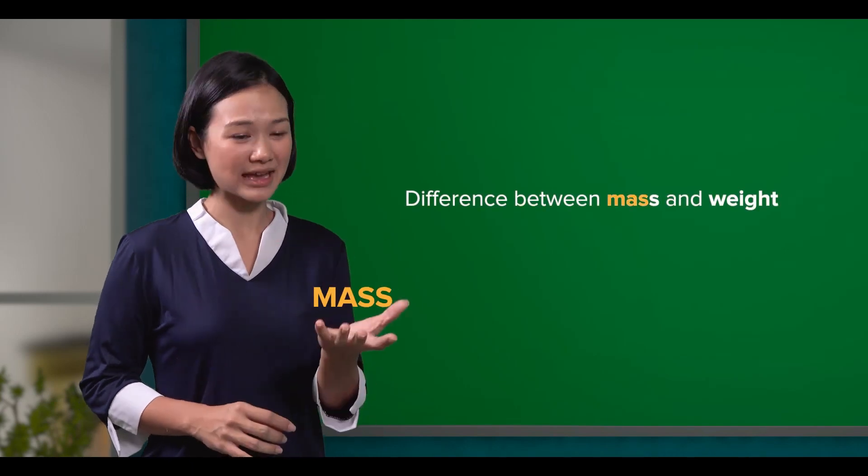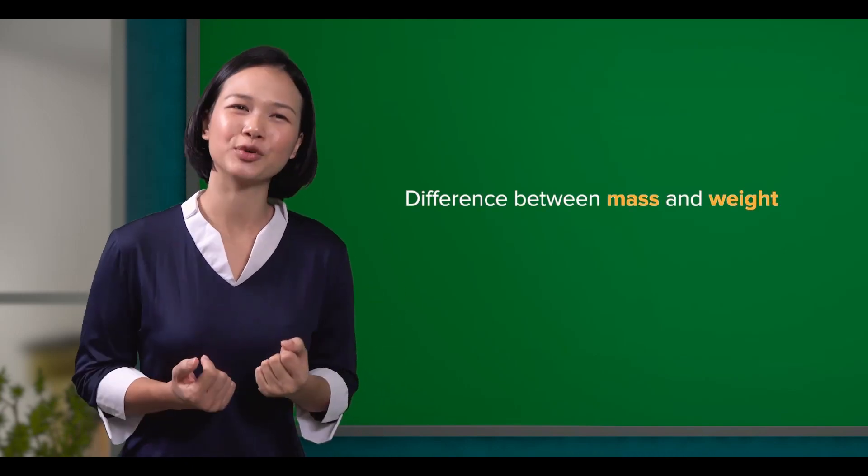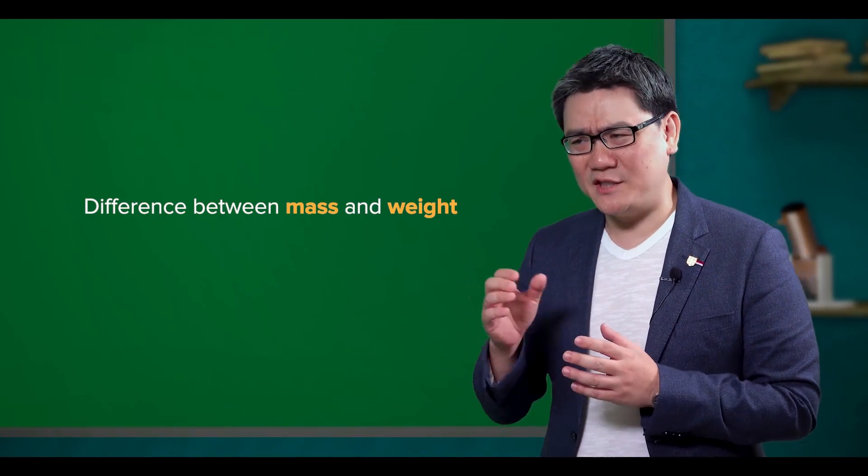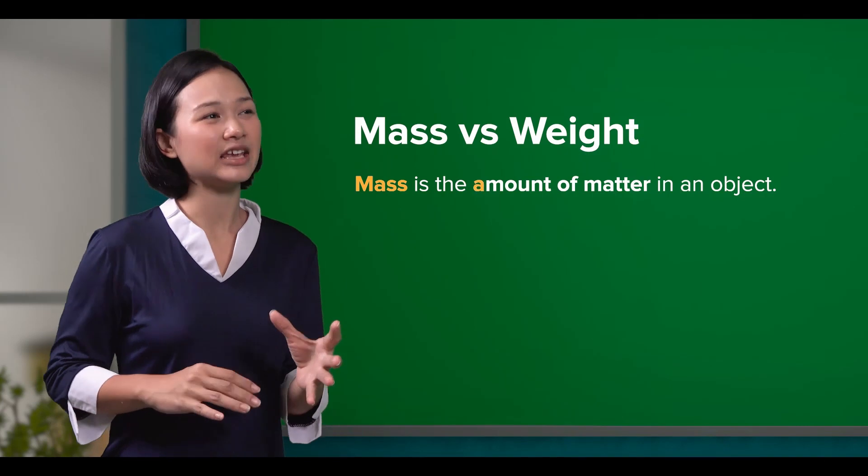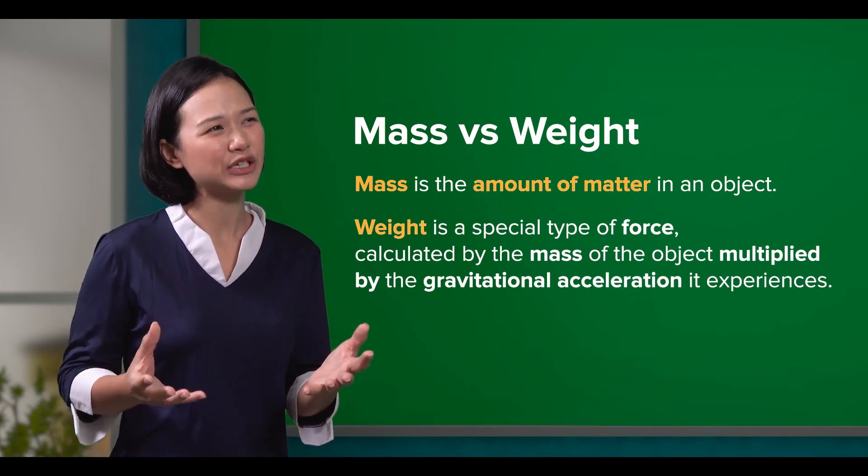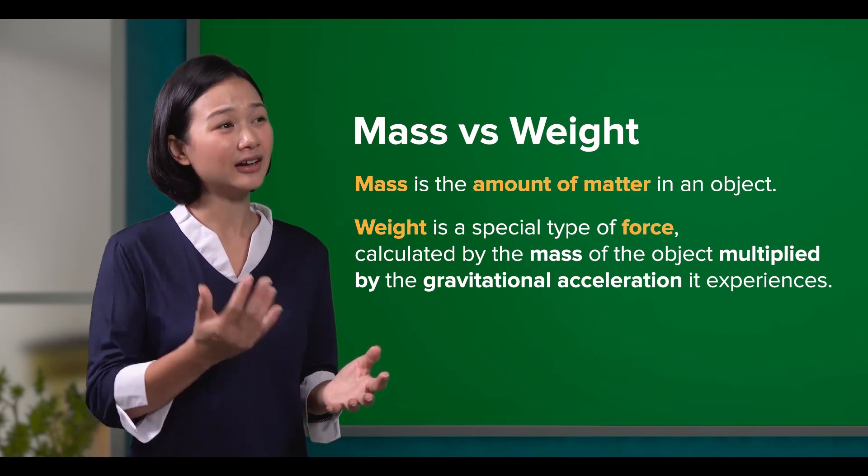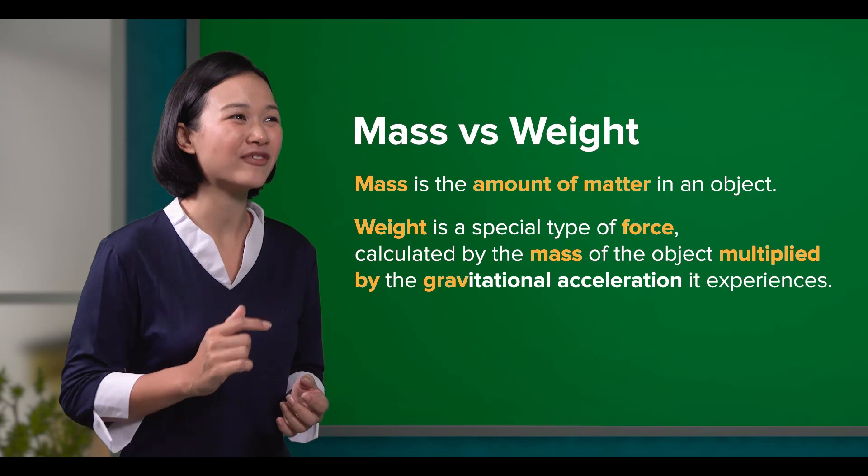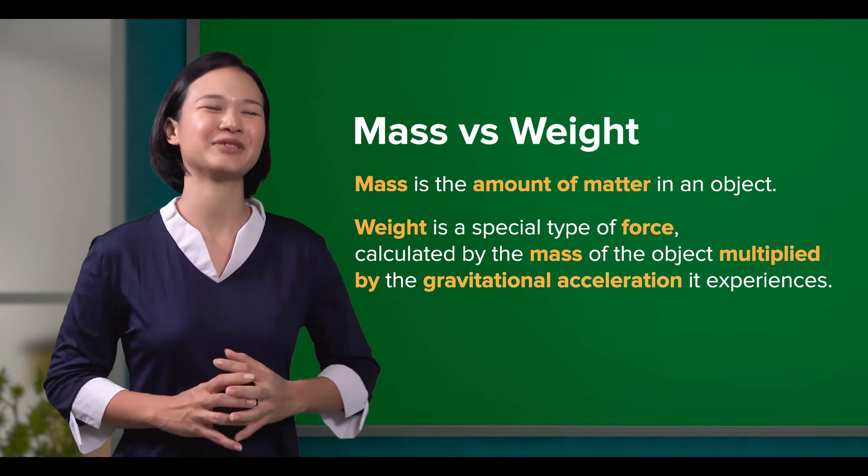Yes, I remember in the previous lessons, we talked about the difference between mass and weight, even though we use the term weight all the time. Do you still remember what is the difference? Yup. Mass is the amount of matter in an object, while weight is a special type of force calculated by the mass of the object multiplied by the gravitational acceleration it experiences.